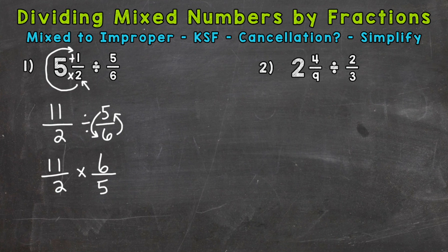Now we're able to multiply straight across. But before doing so, you can always check to see if you can use cancellation. And cancellation, you can think of it as just simplifying the problem before you multiply straight across. So let's see if we have any common factors between the numerators and denominators. And we do. 2 and 6 have a greatest common factor of 2. So we can divide each by 2 here. 2 divided by 2 is 1. 6 divided by 2 is 3.